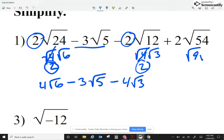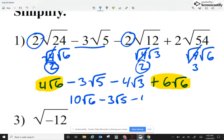Now on this one, I'm thinking 9 times 6. The square root of 9 is 3, so that gives me plus 6 radical 6. Combine your like terms, those are the numbers that have the same radical. In this case, we get 10 radical 6 minus 3 radical 5 minus 4 radical 3.